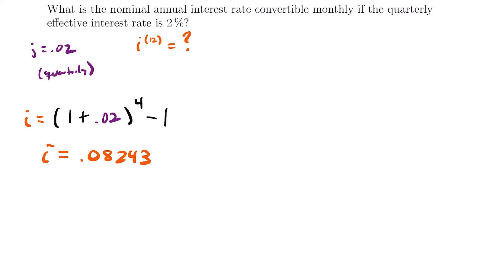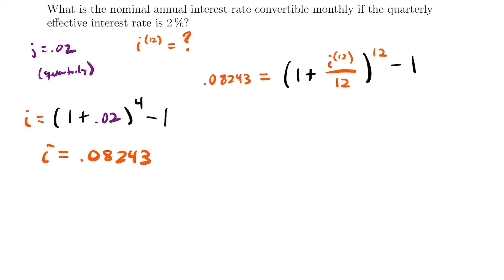Now we can use this to find our nominal annual rate. We know that the annual rate I equals (1 plus the nominal annual rate divided by M) to the power of M, minus 1, where M is 12. Plugging in I = 0.08243 — and make sure you save this value in your calculator without rounding, as rounding off early can give an incorrect answer. Don't do a lot of rounding until you have your final answer.